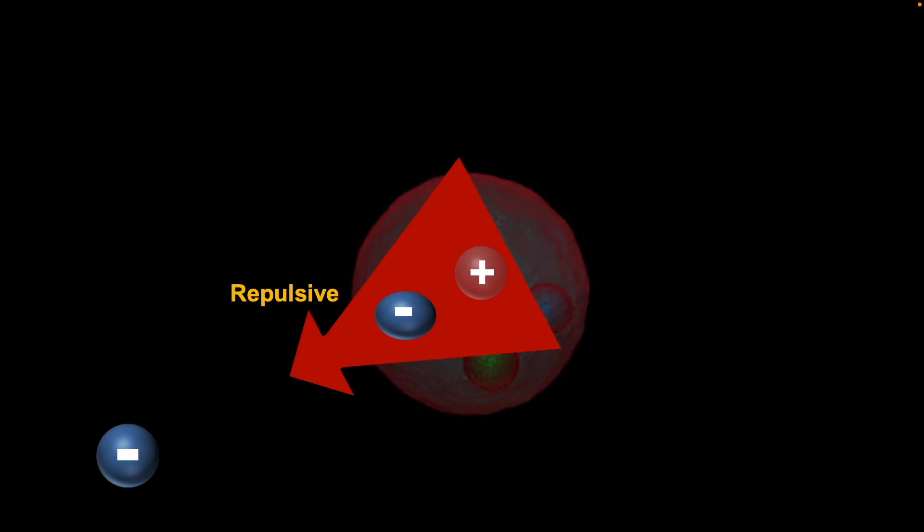It's a very strong force, but again, it diminishes quickly at the cubic distance. So the electron may be attracted from far away, but as it gets closer to the proton, it encounters this repulsive force.